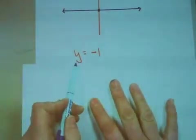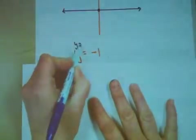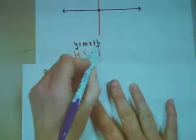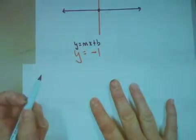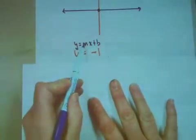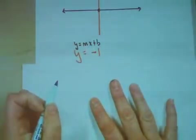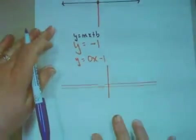Let's graph the equation y equals negative 1. y equals mx plus b is the form we've been working with. Is the negative 1 the m, the x, or the b? That's right, the negative 1 is the b value.